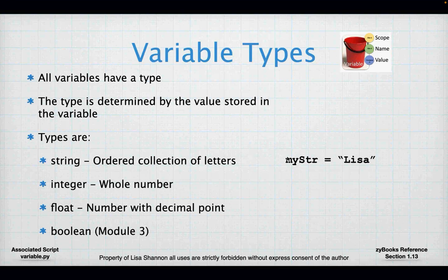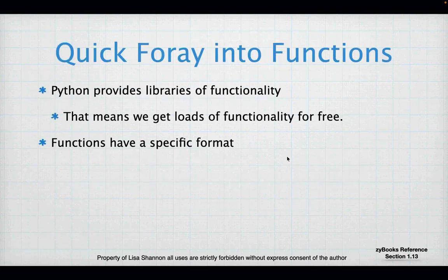A string is, for example, quote 'Lisa' — I have a variable called 'meister' whose value is Lisa. My int is 42 — left-hand side of a single equal sign, value 42. My float is 3.14 — I know it's a variable because it's on the left-hand side of a single equal sign.